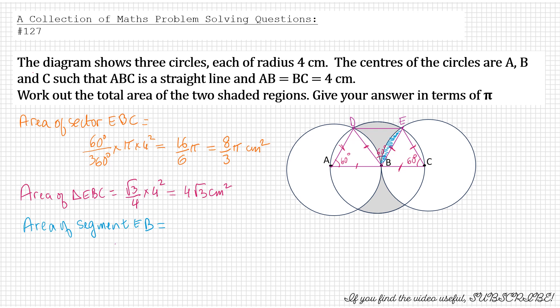So the next thing, area of segment EB would be 8 over 3 pi minus 4 root 3. And then area of segment DB would also be equal. That would be 8 over 3 pi minus 4 root 3.